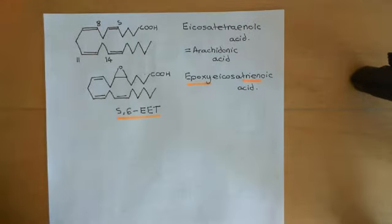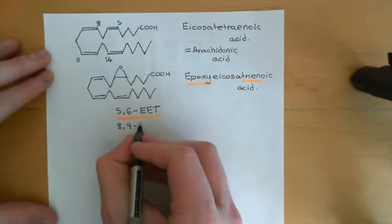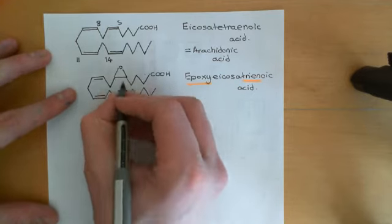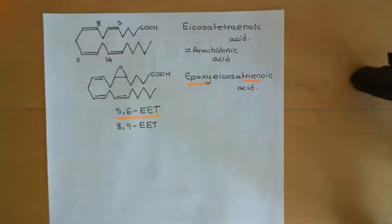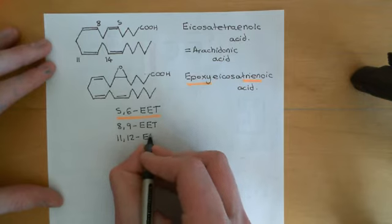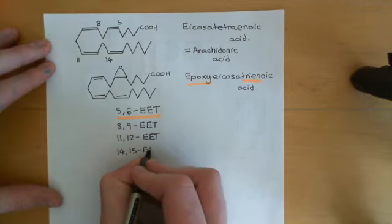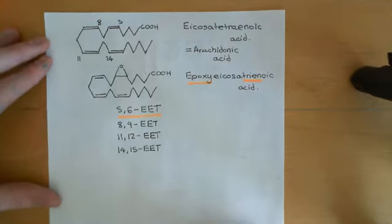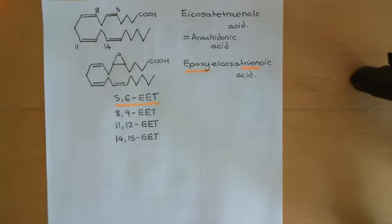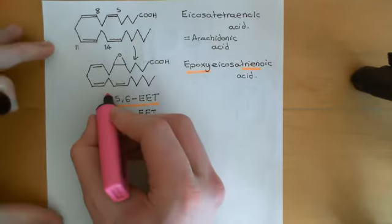You could also produce the 8,9-EET — 8,9-epoxy-eicosatrienoic acid — by picking the double bond between 8 and 9 to break. You could also have the 11,12-EET and finally the 14,15-EET. These cytochrome P450 epoxygenases, in the 2C and 2J families, are capable of catalyzing the conversion of arachidonic acid into any one of these four EET molecules.